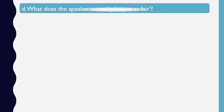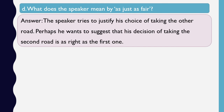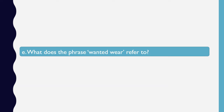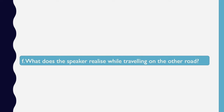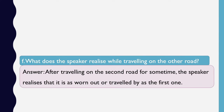What does the speaker mean by 'just as fair'? The speaker tries to justify his choice of taking the other road — perhaps he wants to suggest that his decision of taking the second road is as right as the first one. What does the phrase 'wanted wear' refer to? The speaker uses this phrase to describe the other road. The other road looks grassy and unexplored; therefore, it looks fresh and is not worn out by the footsteps of travellers. What does the speaker realise while travelling on the other road? After travelling on the second road for some time, the speaker realises that it is as worn out or travelled by as the first one.